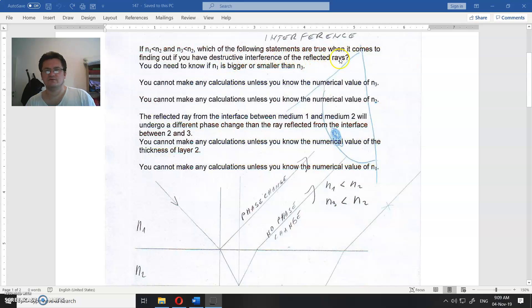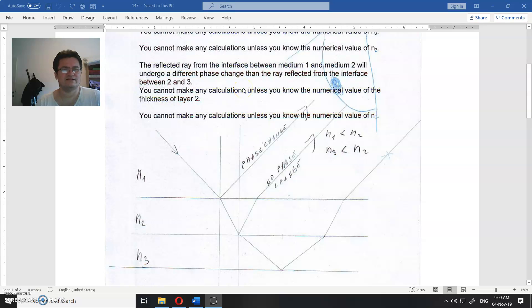Which of the following statements are true when it comes to finding out if you have destructive interference of the reflected rays? So this is one statement, second and third statement. Let's see what kind of reflected rays we have here.